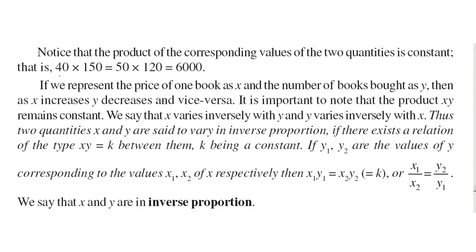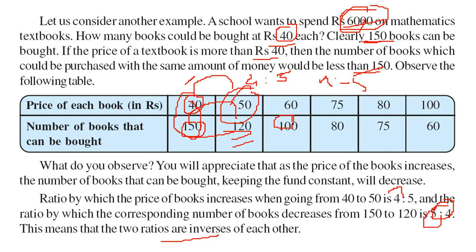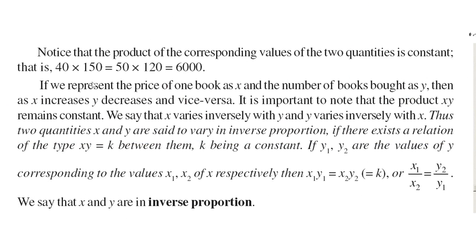So one thing you would notice that once you multiply 50. That means 40 into 150 will be equal to 50 into 120 because the price remains same. So you can say that when you multiply 40 into 150 and 50 into 120, you get 6,000. So here we have observed one thing that if you take x as the cost of one book and y as the number of books bought. So as x increases, y decreases and similar is the case for this. So x, y varies inversely with y and y varies inversely with x.